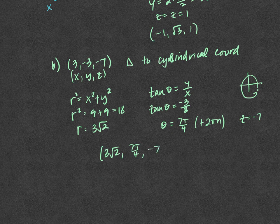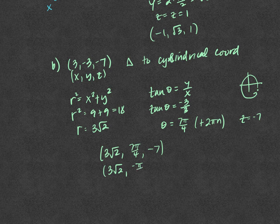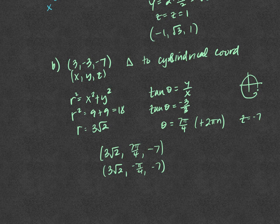You could also write it as (3√2, −π/4, −7) since that's the same angle. There are infinitely many choices — you could add 2π to get 15π/4, and so on. Remember there are lots of coterminal angles.